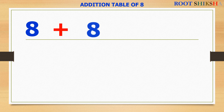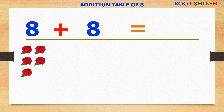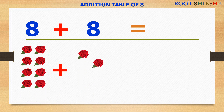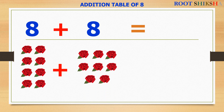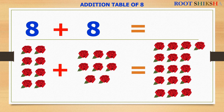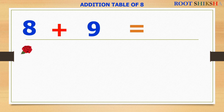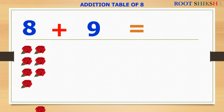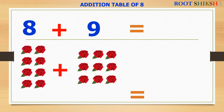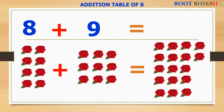8 plus 8 equals to — count with me: 1, 2, 3, 4, 5, 6, 7, 8. 8 plus 8 equals to: 1, 2, 3, 4, 5, 6, 7, 8, 9, 10, 11, 12. 8 plus 8 equals to: 1, 2, 3, 4, 5, 6, 7, 8, 9, 10, 11, 12, 13, 14, 15, 16. 8 plus 9 equals to: 1, 2, 3, 4, 5, 6, 7, 8, 9, 10, 11, 12, 13, 14, 15, 16, 17.